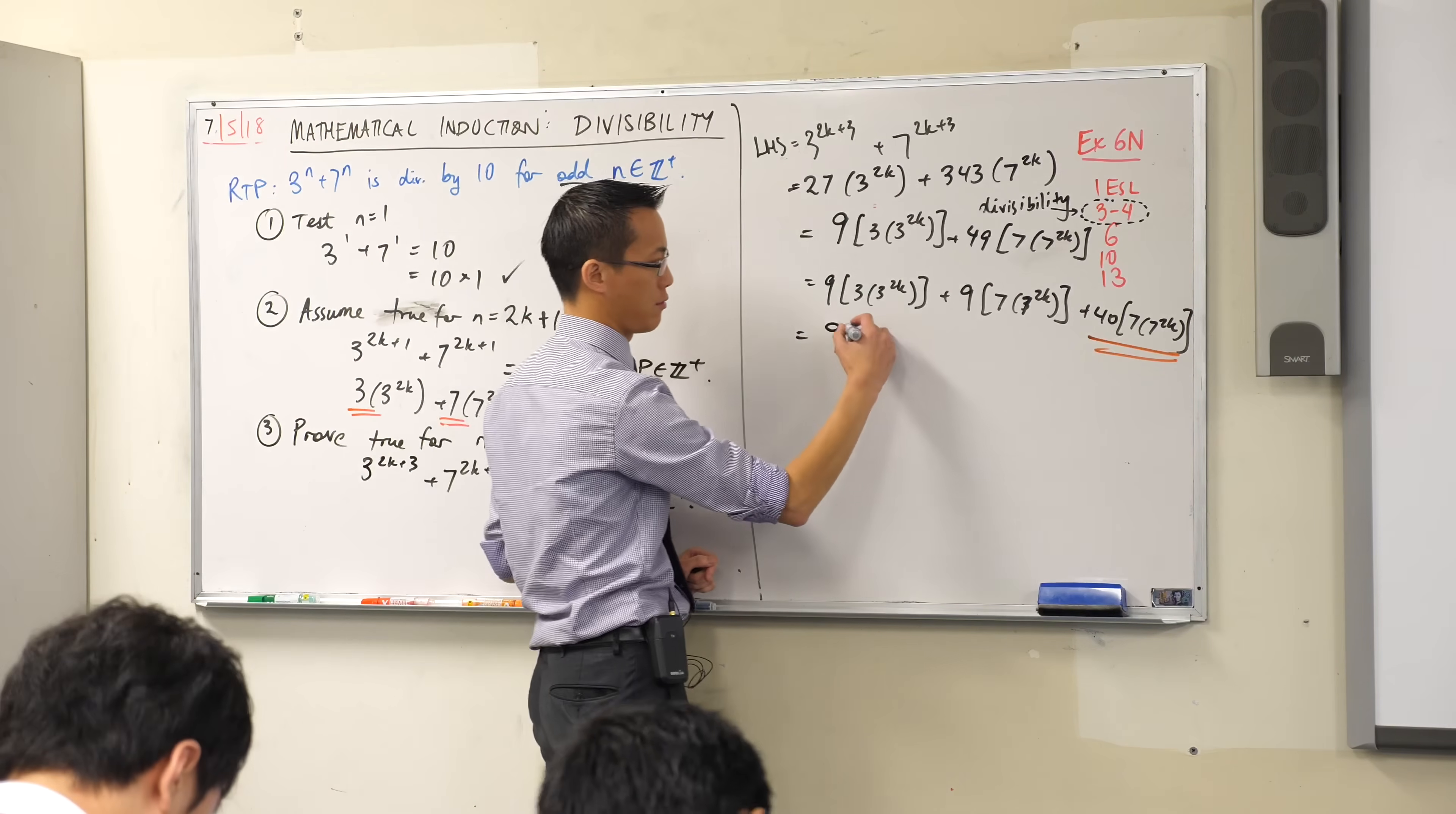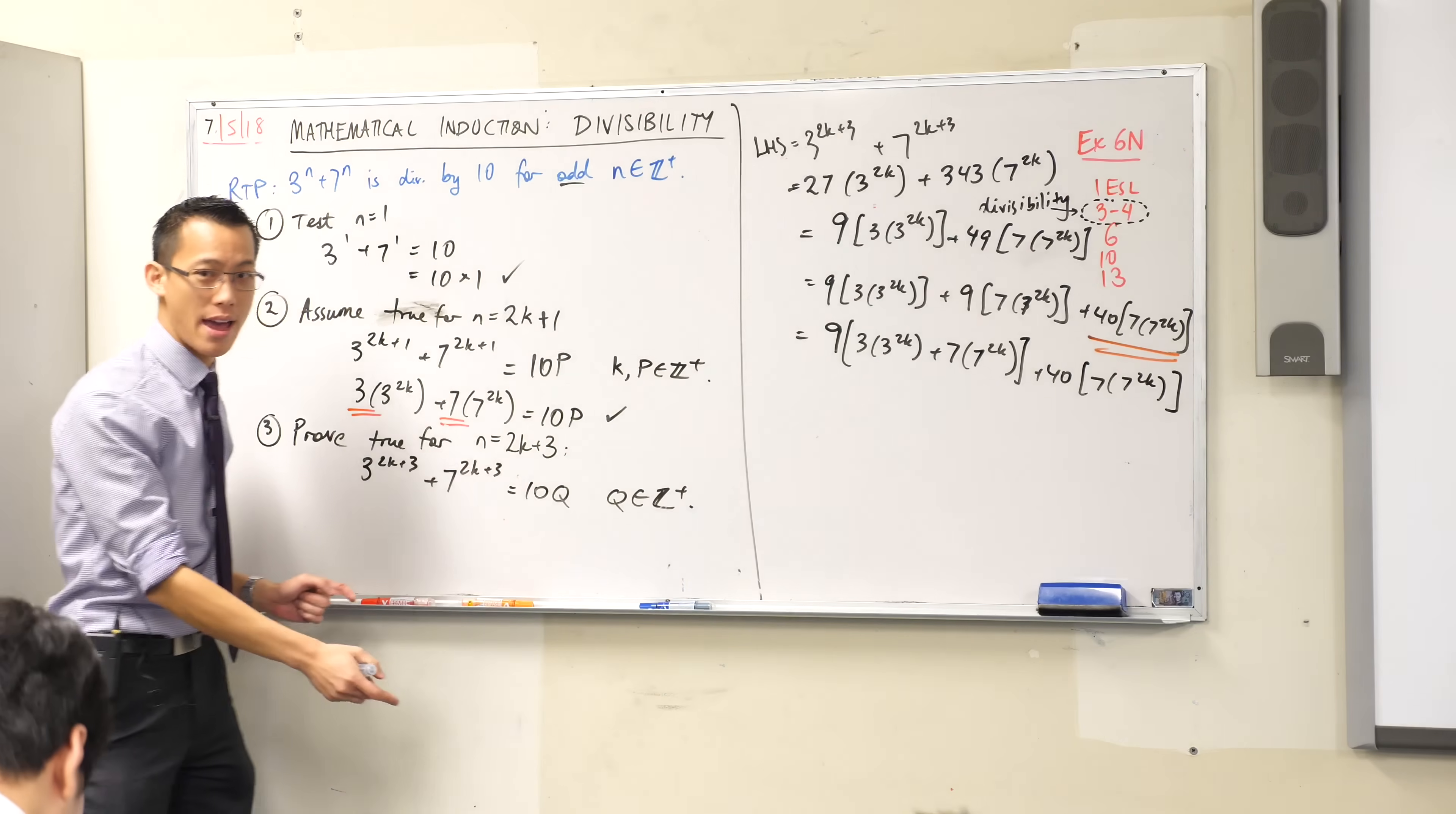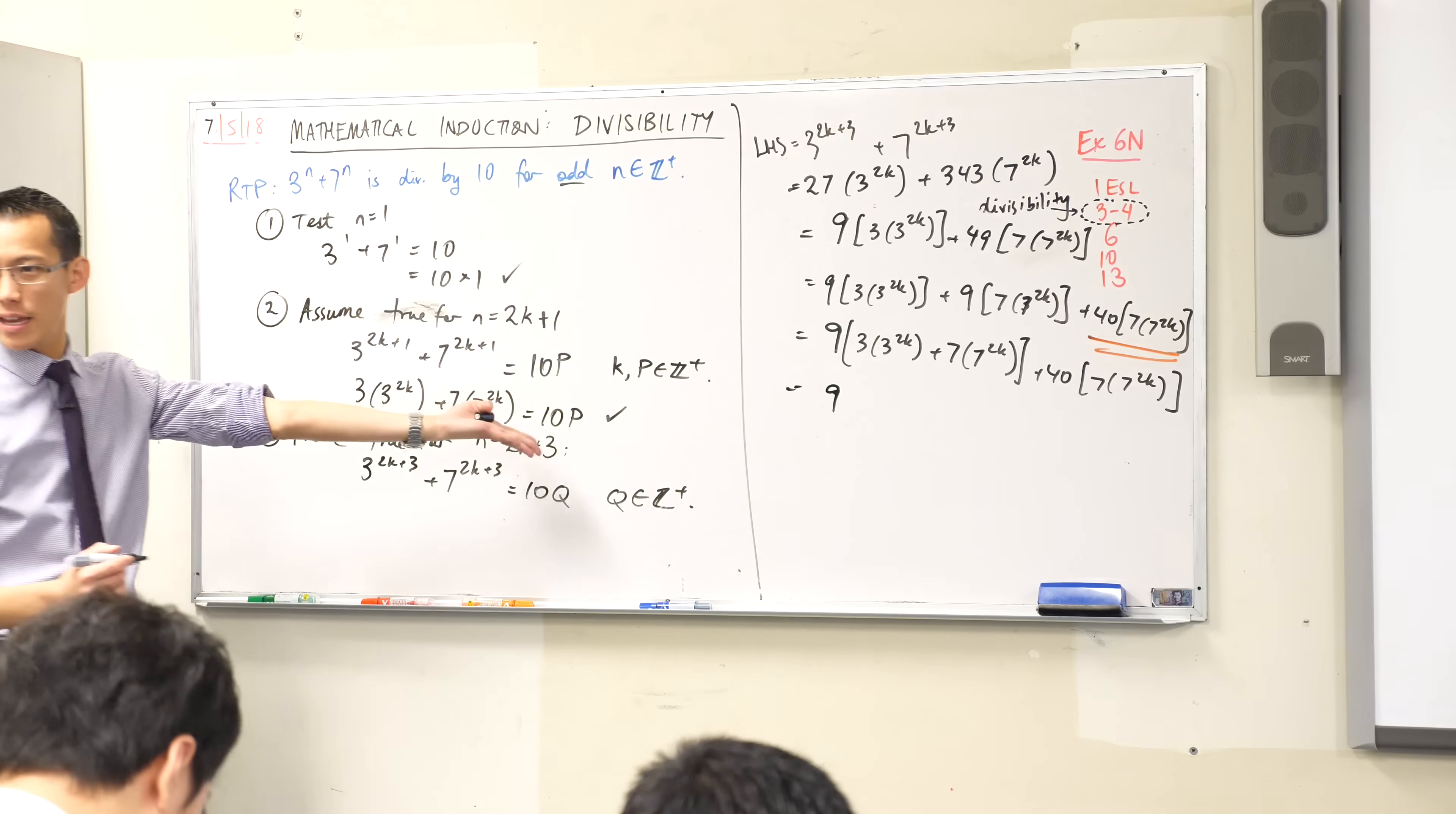In fact, I'm even going to do, yeah, yeah, I better write it in long form. Like so. Having factorized, I can now use my, what's the thing about mathematical induction? The big central piece is the assumption, right? It's the only thing you do in mathematical induction, never where else. So I can say that's 9 times what? Get out of its way again. 10p. 10p. Very good.